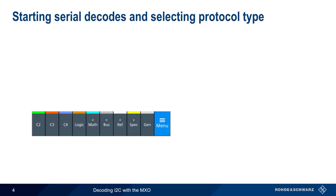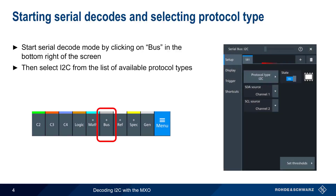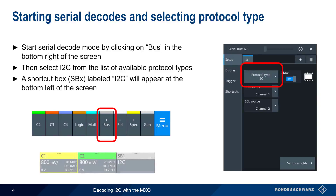The first step in decoding I2C data with the MXO is to select BUS from the list of items in the bottom right corner of the screen. Then select I2C from the list of available protocol types. This will also create a small box labeled I2C in the signal bar near the bottom left corner of the screen, which can be used as a shortcut for configuring I2C parameters.